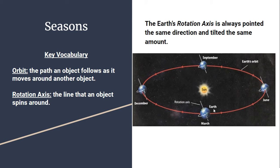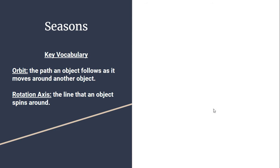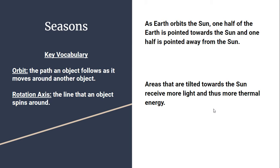In this diagram, you can see that in June, the axis is tilted up and to the left, pointing toward the Sun — at least the northern hemisphere is pointing at the Sun. As we rotate around to September, the axis is still pointed up and to the left, but now it's straight on, neither pointing at nor away from the Sun. Continuing to December, the axis is still pointed up and to the left, but now the southern hemisphere is tilted towards the Sun and the northern hemisphere is tilted away. By March, the rotation axis is again neither pointing towards nor away from the Sun.